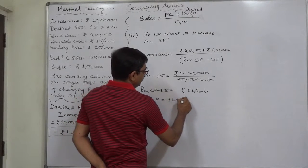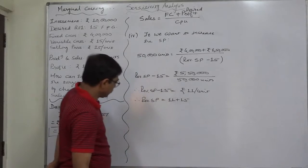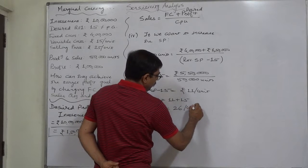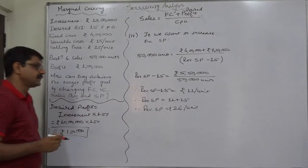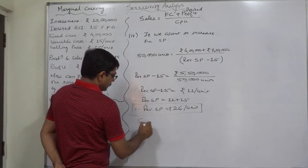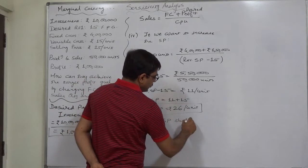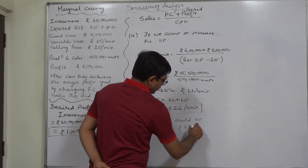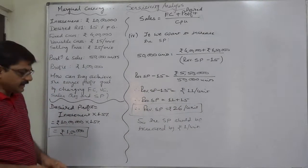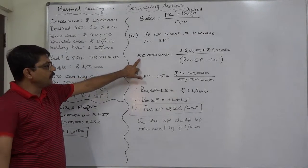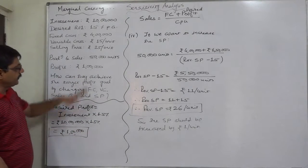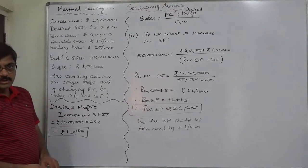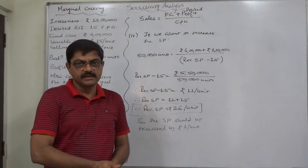The revised selling price should be 11 plus 15, which equals rupees 26 per unit. So the company should increase its selling price from rupees 25 to rupees 26 per unit — an increase of rupee 1 per unit. That rupee 1 increase in contribution across 50,000 units gives rupees 50,000 more in profit, and ultimately the target profit of 15 percent of investment can be achieved. This was a very simple case of sensitivity analysis. Thank you very much.